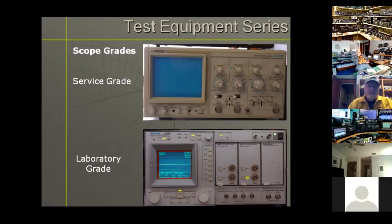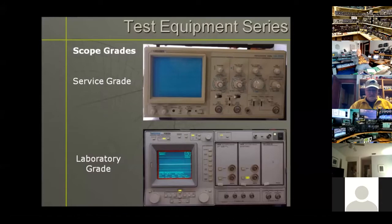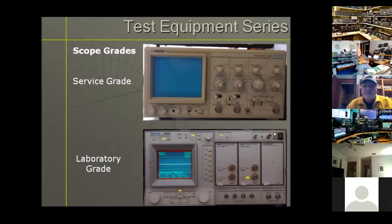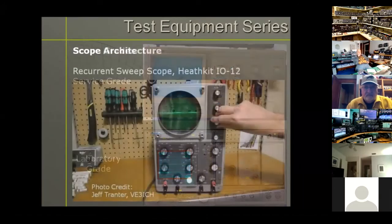In scope grades, we generally have service grade and laboratory grade. A service grade such as this Leader 20 MHz dual trace scope is solid state with the exception of the CRT. It makes a good general monitor scope, and being triggered and calibrated, you have a very good scope. It's great for a shack — the size isn't too awful big. In the laboratory grade you have Tektronix, Keysight, LeCroy, and others that are very expensive.